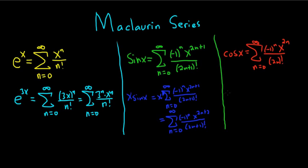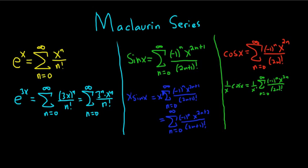What if you wanted to find the Maclaurin series for 1 over x times cosine of x? In this case you just multiply by 1 over x, so you have 1 over x times the infinite sum as n goes from zero to infinity of negative 1 to the n times x to the 2n over 2n factorial. When you have x to the 2n over x to the 1, you get x to the 2n minus 1, giving the infinite sum from zero to infinity of negative 1 to the n times x to the 2n minus 1, over 2n factorial.